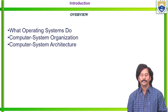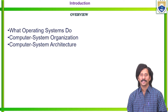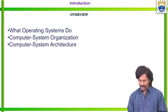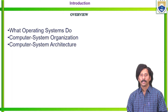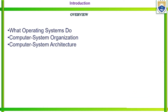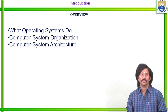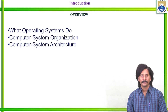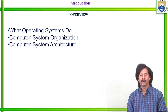So basically, what does that particular operating system mean? What is the purpose of that particular operating system? Why do we need an operating system? In this video, I am going to discuss about what operating systems do, how the computer system organization is established, and what are the various computer system architectures — because the prerequisite for operating systems is computer organization.